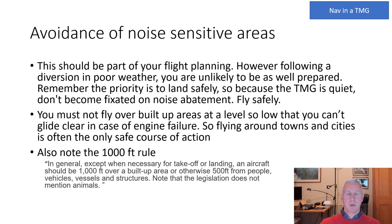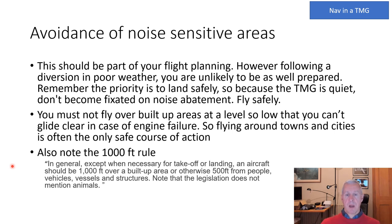Consider noise-sensitive areas during planning, but in a diversion in poor weather, landing safely takes priority — the TMG is quiet, so don't become fixated on noise abatement. Remember the rules: over built-up areas you must be above 1,000 feet; and the 500-foot rule requires at least 500 feet from people, vehicles, vessels and structures — meaning more than 500 feet above the ground or any mast.